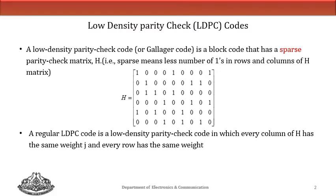There are two classifications for LDPC codes: regular and irregular, based on the row weight and column weight. The column weight is the number of ones in each and every column of the H matrix, and the row weight is the number of ones in each and every row of the H matrix. If the row weight is the same for all rows in the H matrix, then the given LDPC code is a regular LDPC code.